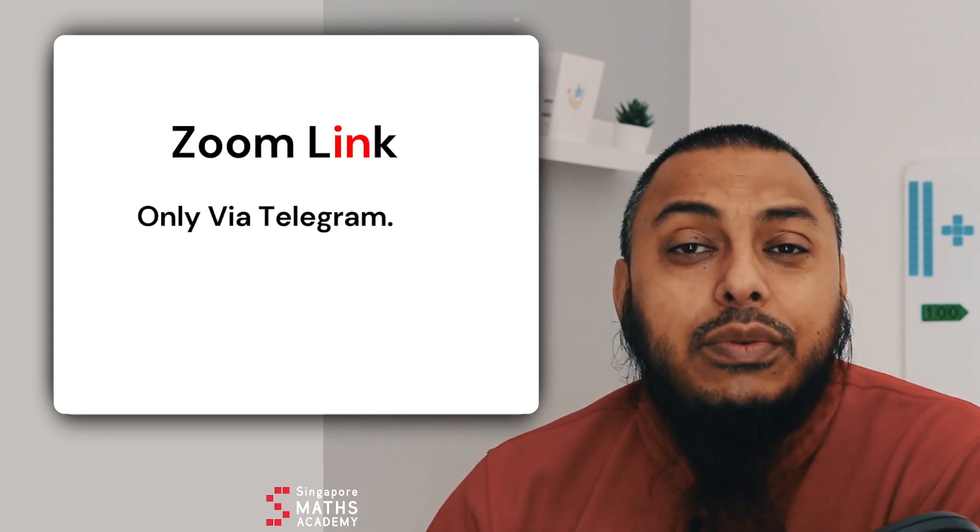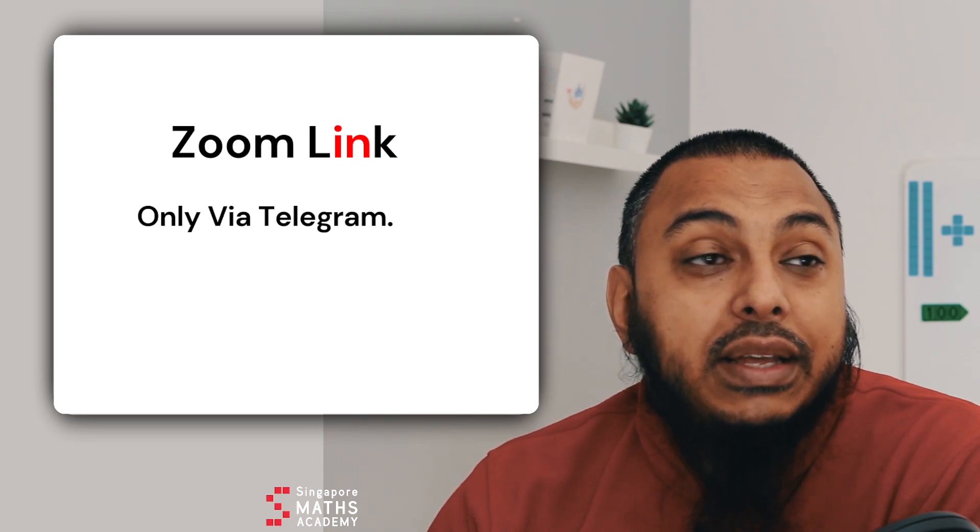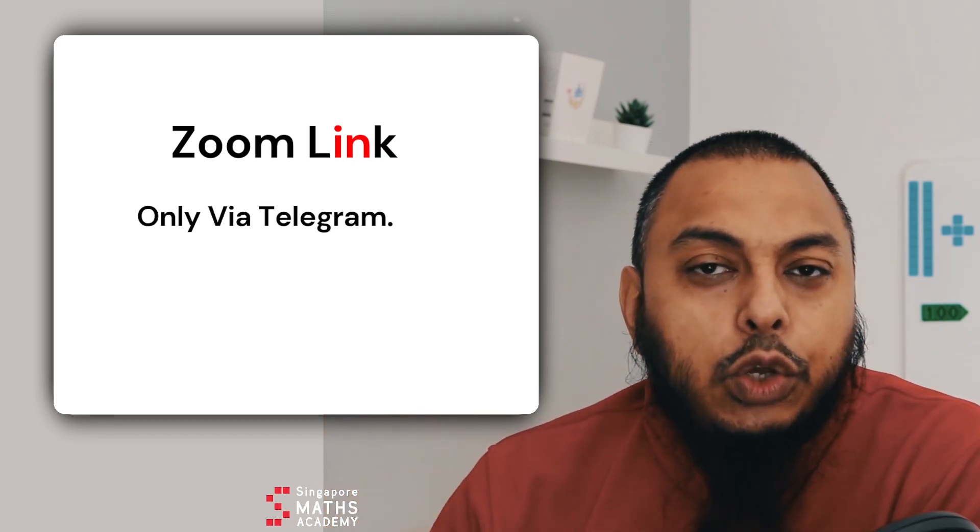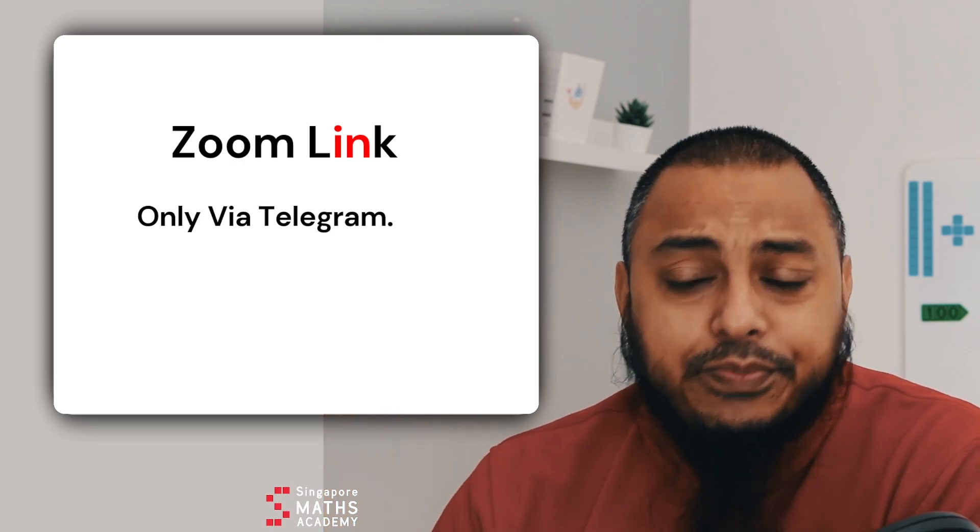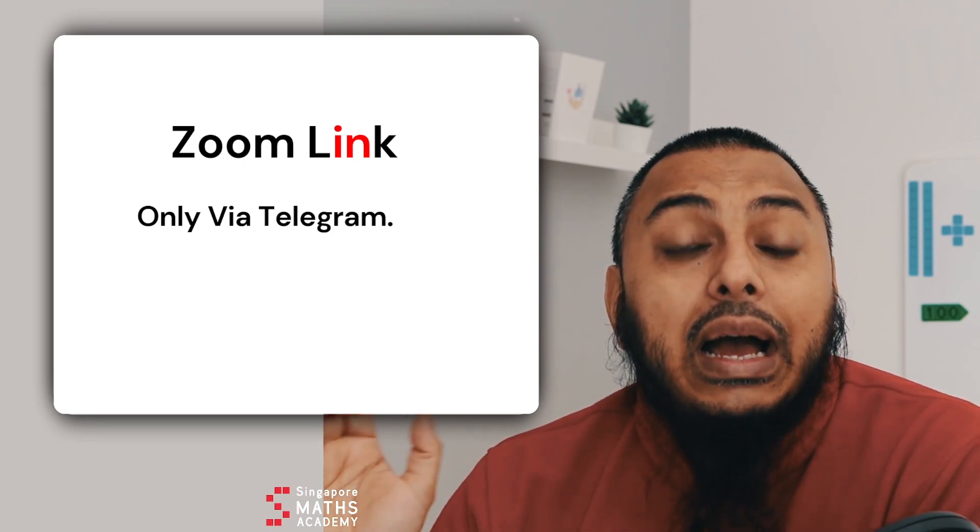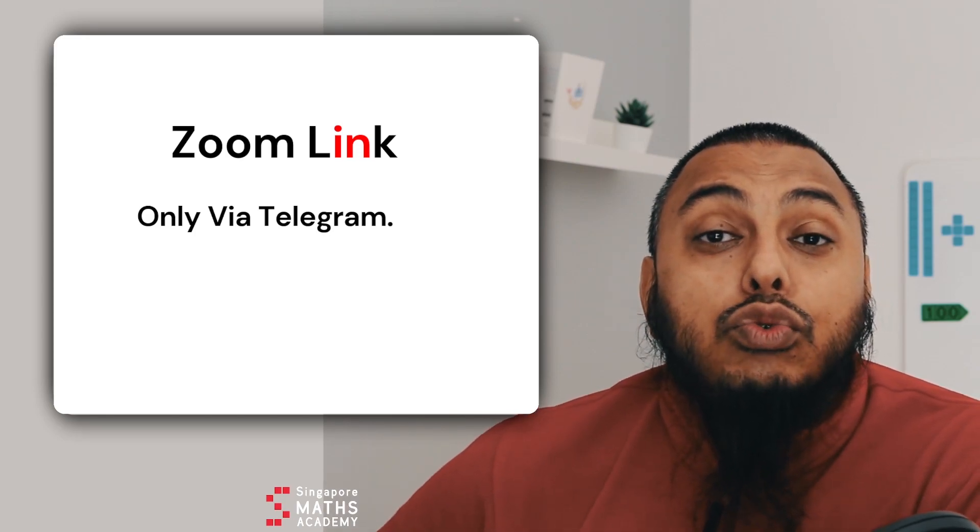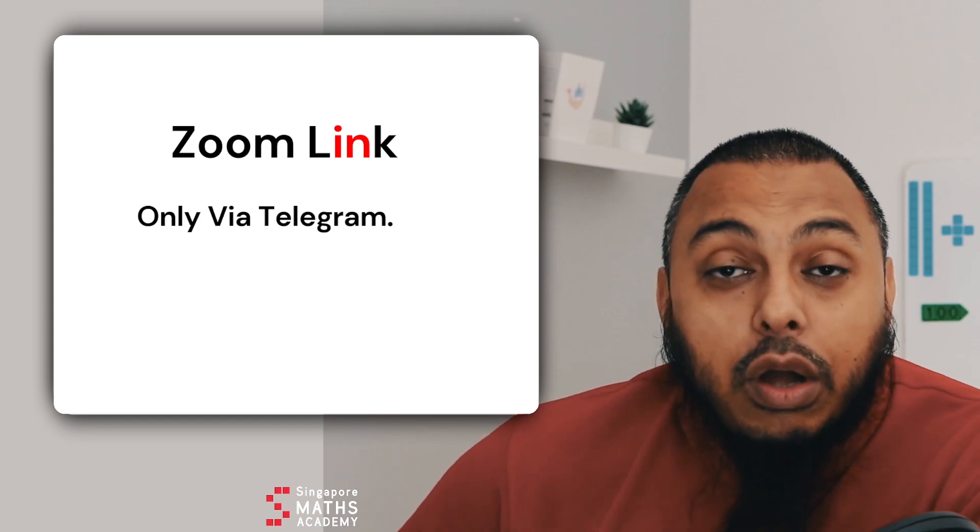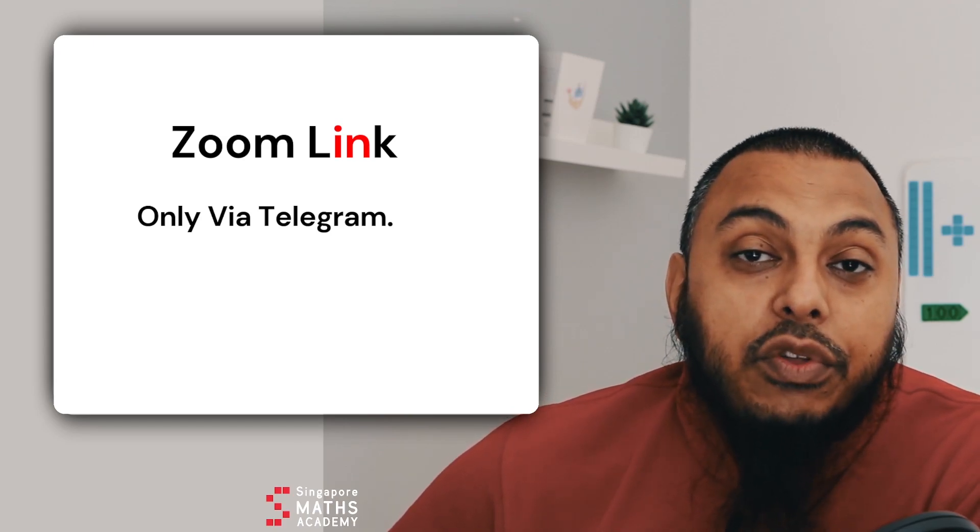So how do we join? Well, sometimes it'll be through a zoom link and it'll be via our Telegram group. The zoom link is going to be a secure link with only children allowed in the group and the zoom call, and that will allow them to really flourish and understand whatever we're going through whether it's mental maths or arithmetics.